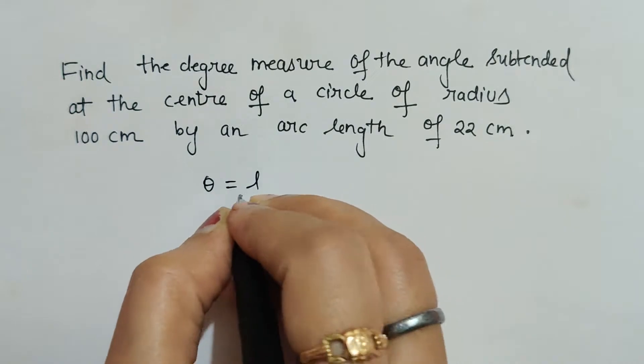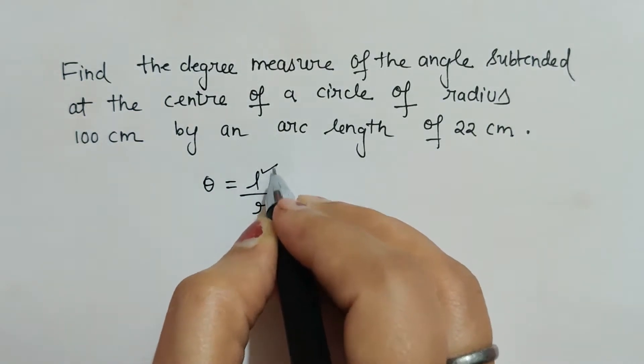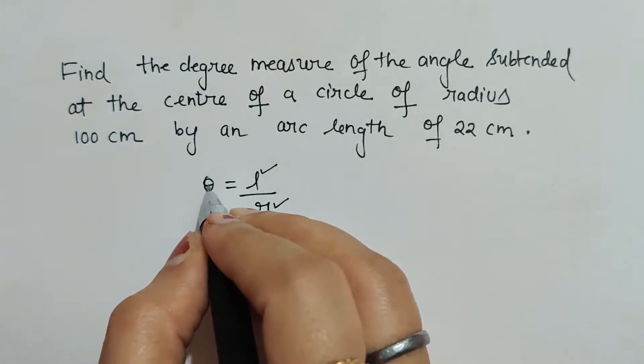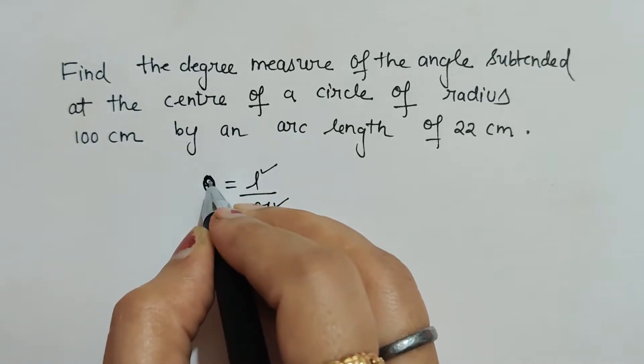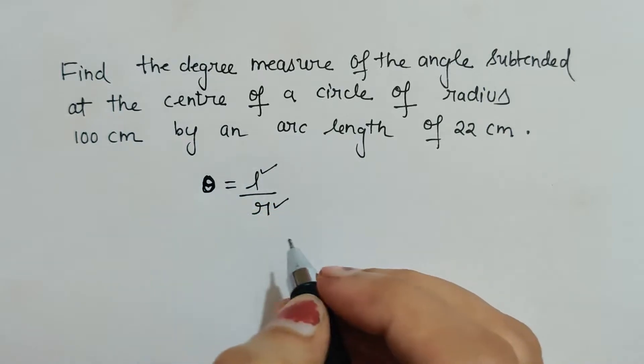The formula that we will use is theta equals l upon r, where l is arc length, r is radius, and theta is the angle. Here the angle which we have is in radian; the unit of the angle is radian.